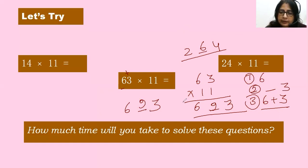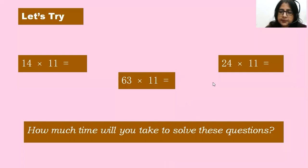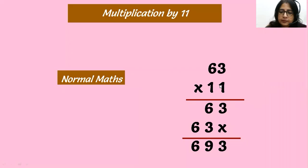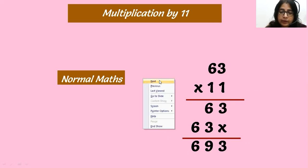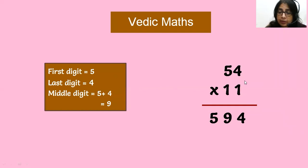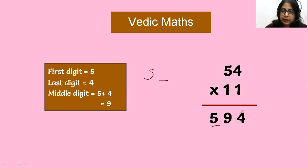Let's do some more practice. In conventional math: one into three is three, one into six is six, three ones are three, three into one is one, six into one is six — then you add all those steps. But in Vedic math, for 54 into 11, the first digit is five, the last digit is four — write them with a space — and in the middle, five plus four is nine. So five, nine, four is the answer.